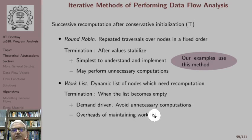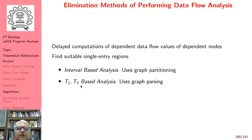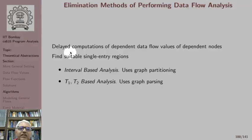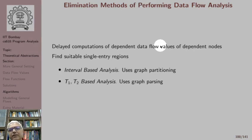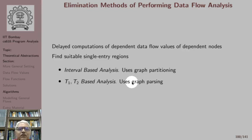We will see an interesting algorithm which combines the benefits of both the round robin algorithm and the work list algorithm. Elimination methods essentially involve delayed computations of dependent data flow values. For example, if we have a loop, the data flow values of nodes within the loop depend on the loop entry for a forward data flow problem. These methods work by finding suitable single entry regions. One is called interval based analysis, which partitions the graph into intervals, and another is T1-T2 based analysis, which parses the graph by identifying certain structures. We will not cover these methods.